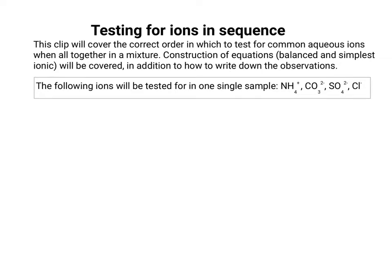Hello, welcome to this clip going through how we test for common aqueous ions. We'll focus in particular on what happens if you have them all together in one sample. I'll go through the construction of both types of equation — the main balanced symbol equation and also the simplest ionic version. In addition, we'll look at how to write down the observations so it's clear to the person reading that you've correctly written out what you've seen.